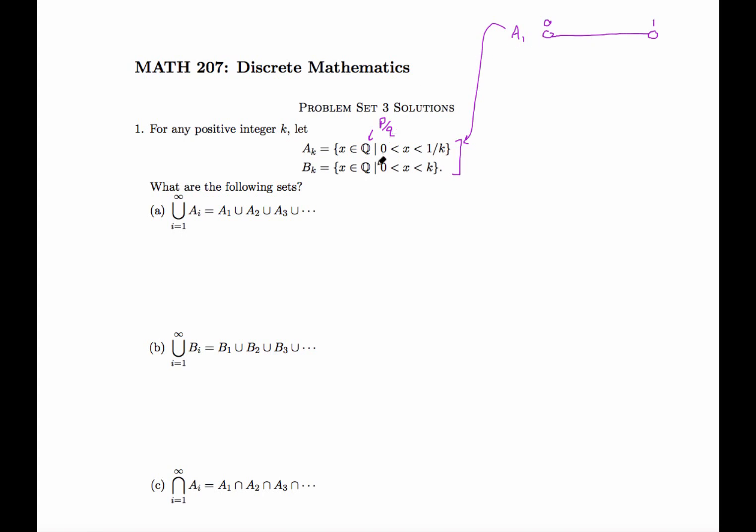So we don't include our endpoints, so A_1 is going to go from 0 up to 1, non-inclusive. A_2 is going to go from 0 to 1 half. A_3 is going to go from 0 to 1 third, etc.